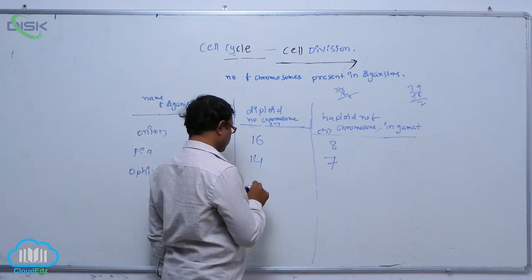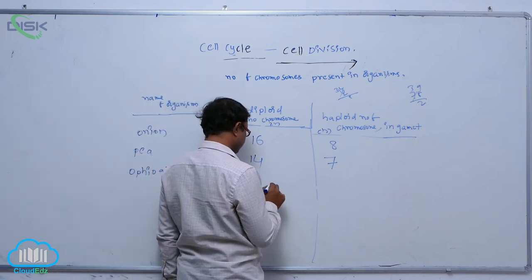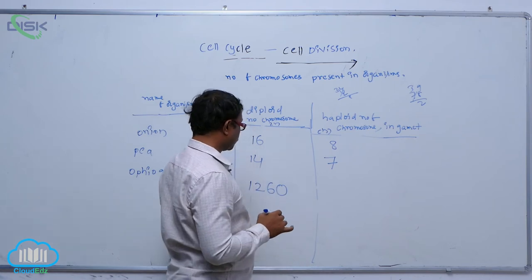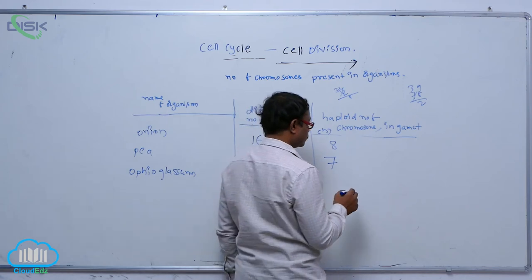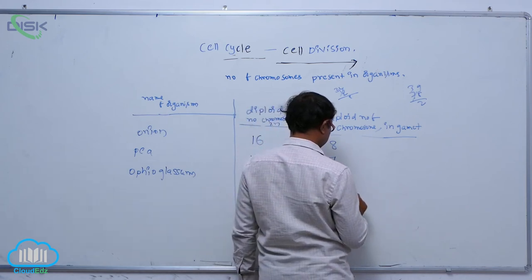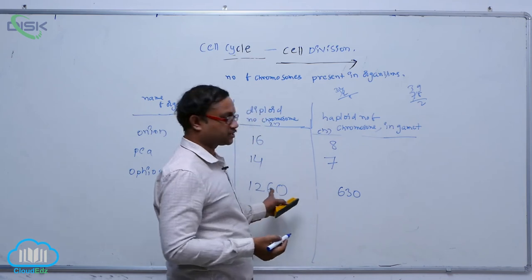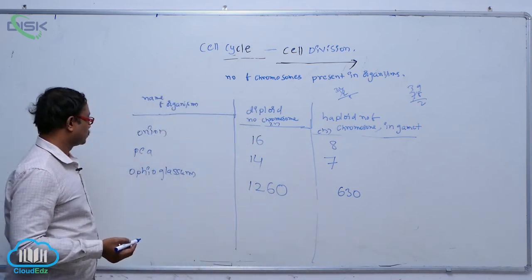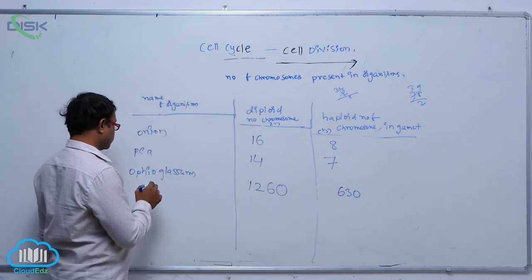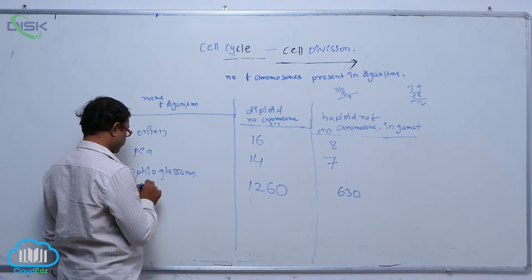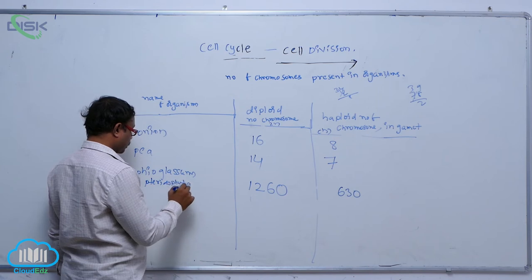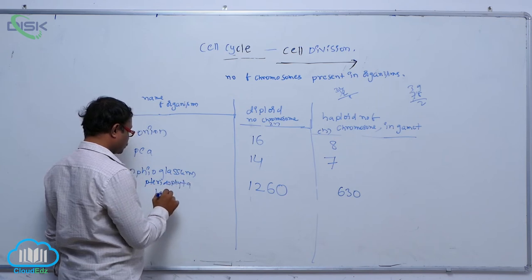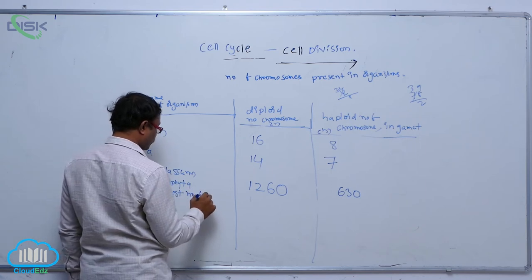After that, Ophioglossum: the diploid number of chromosomes is 1260. That means the haploid number of chromosomes is 630. Ophioglossum is a pteridophyta plant and has the largest number of chromosomes in the plant kingdom.